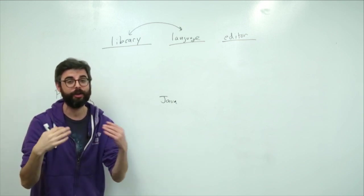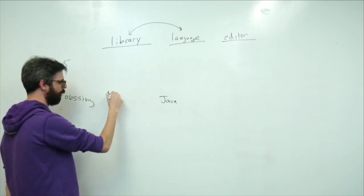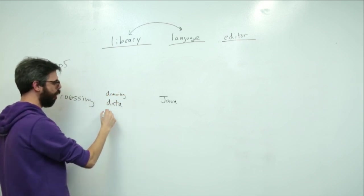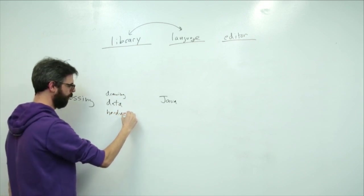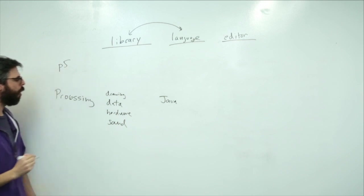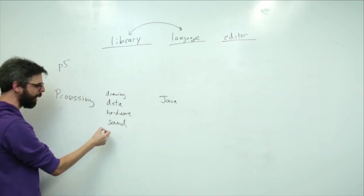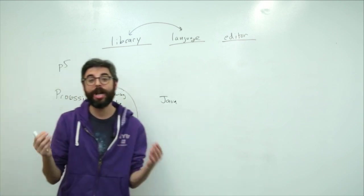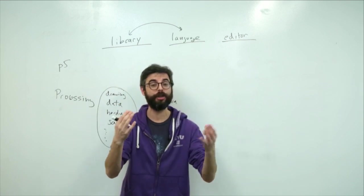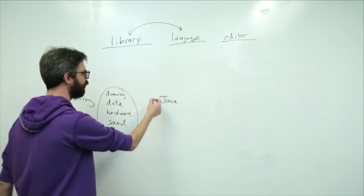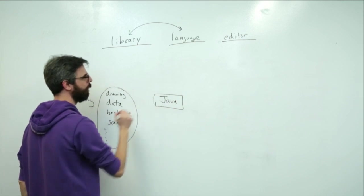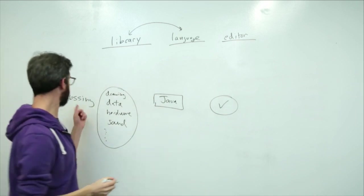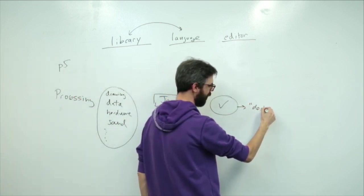Processing is a library for the Java programming language. The library, the things that Processing is adding or building on top of or giving you features for are things like drawing, data, hardware, sound. So maybe this is a good way of thinking about it.